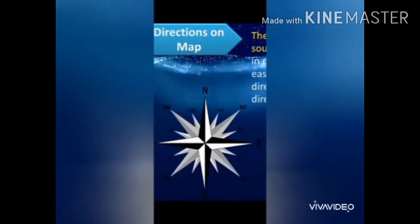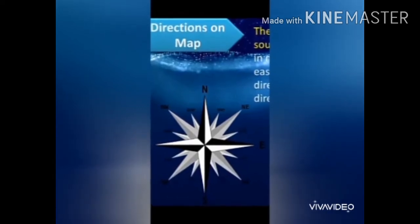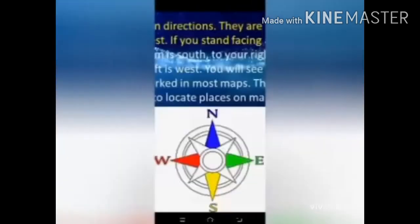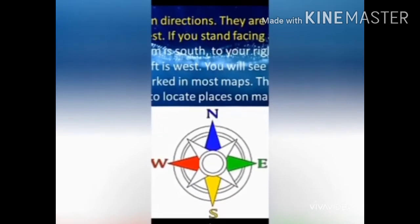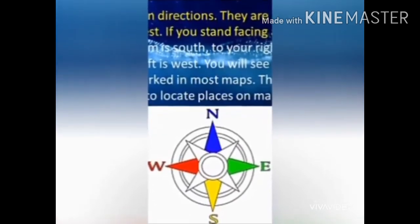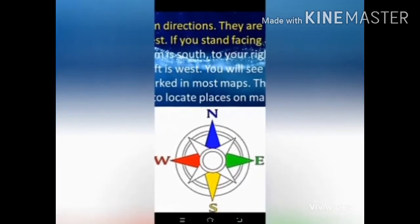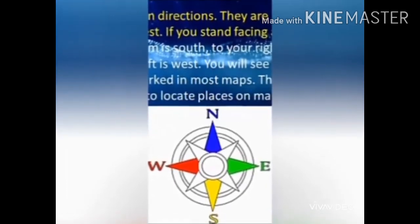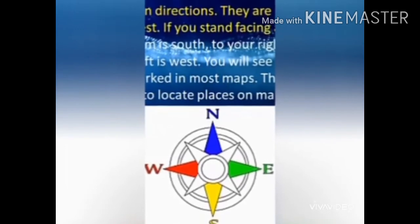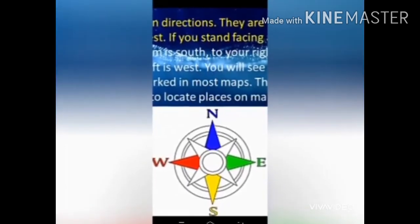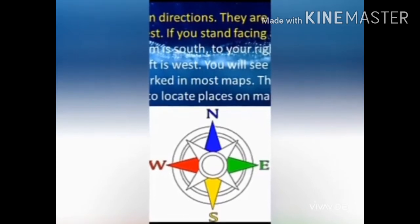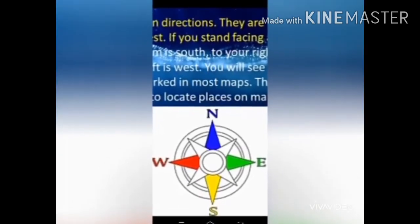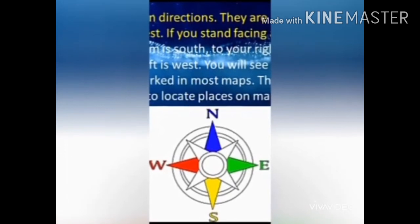Now, how do we read a map? To read a map, we should know the directions. The directions on the map are shown by an arrow marked N, which indicates the North direction. Once we know the North direction, we can easily find the other directions. There are four directions on a map: North, South, East, and West. If you stand facing a map, the top is North, the bottom is South, to your right is East, and to your left is West. These directions help us to locate places on maps.